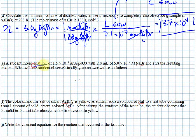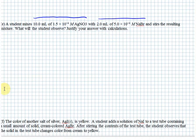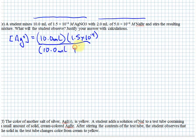New experiment: we mix 10 mL of 1.5×10⁻⁴ molar silver nitrate with 2 mL of 5×10⁻⁴ molar sodium bromide. The key is recognizing that nitrate ion and sodium ion are spectators. We're creating a solution where the silver ion concentration must account for dilution. With 10 mL of the silver nitrate solution mixed with 2 mL of the other, the total volume is 12 mL. The concentration of silver ion ends up being 1.3×10⁻⁴ molar.